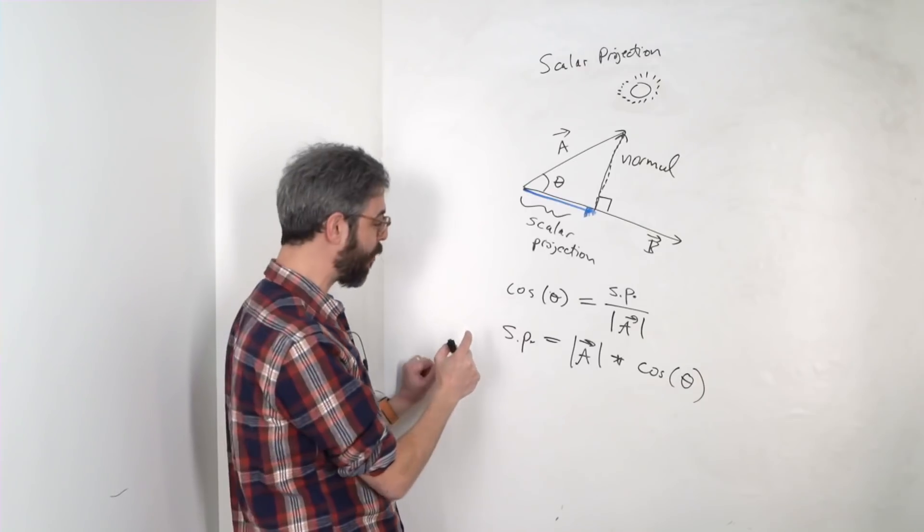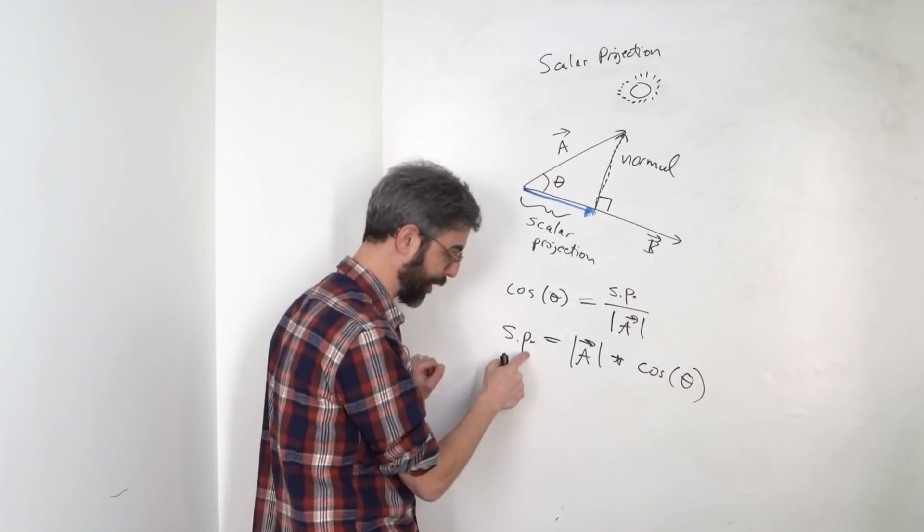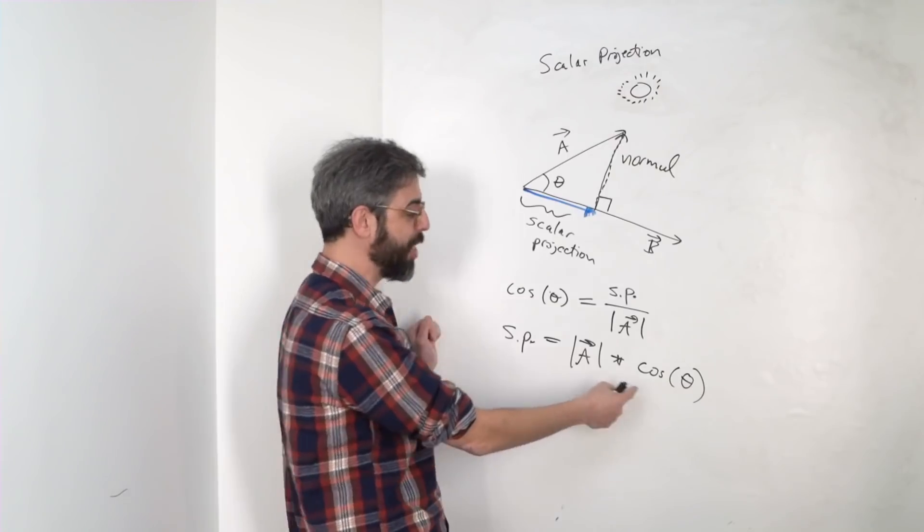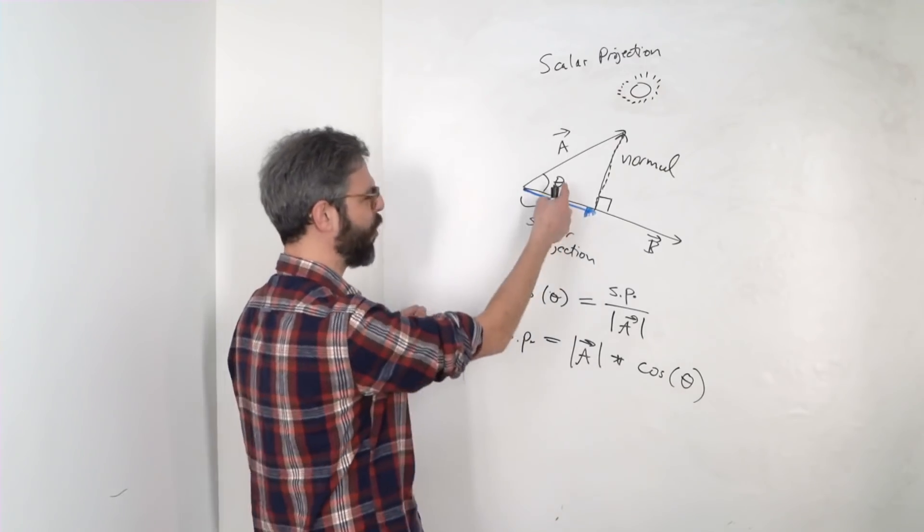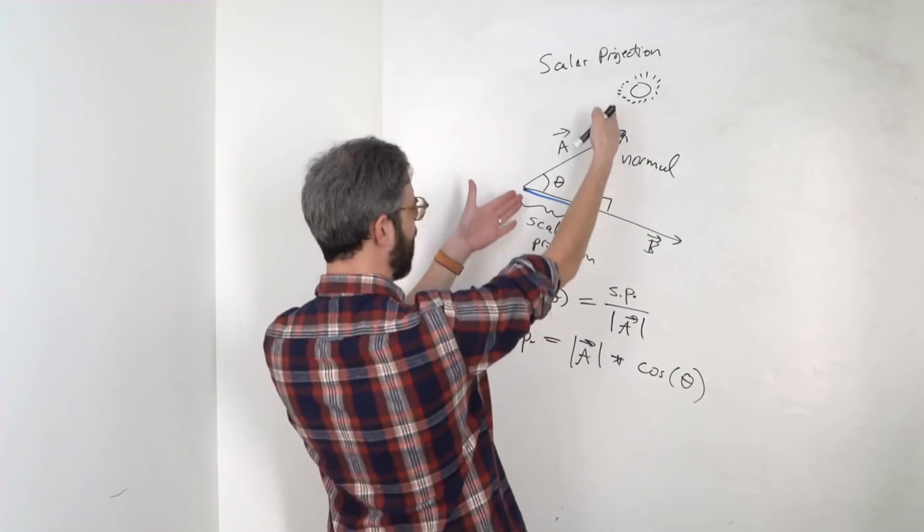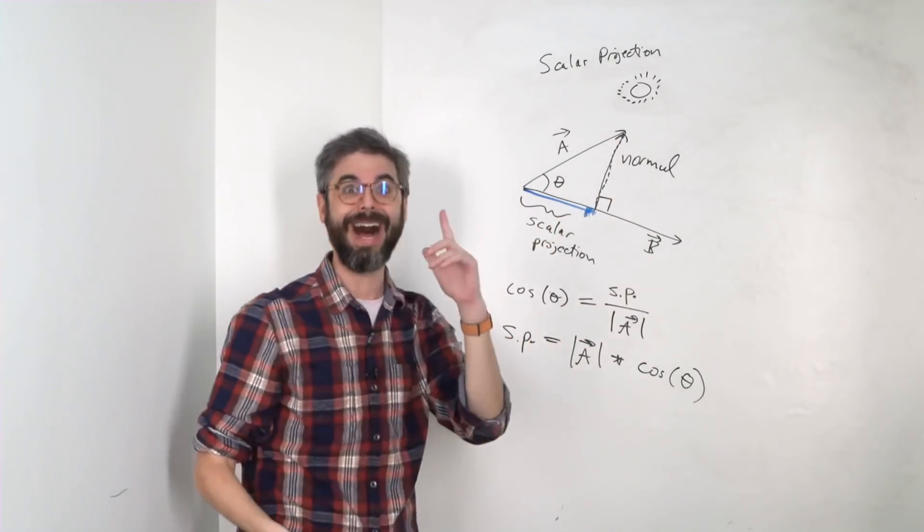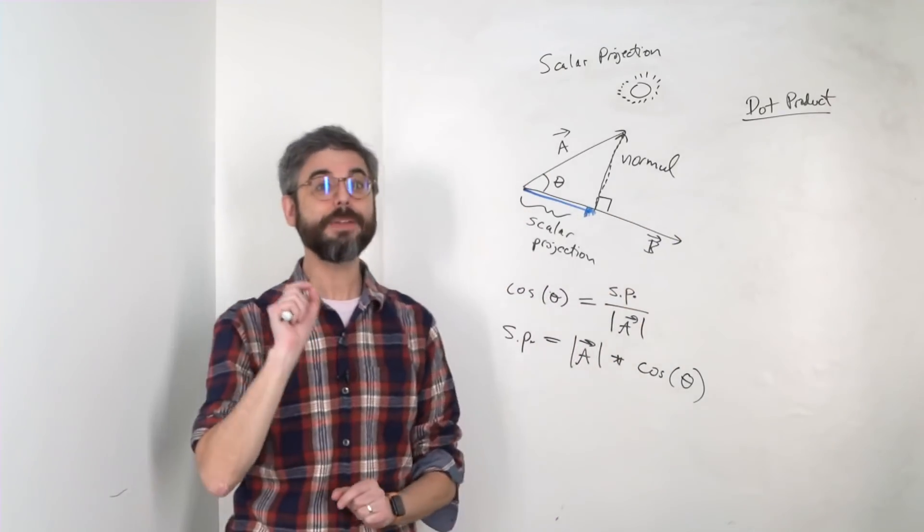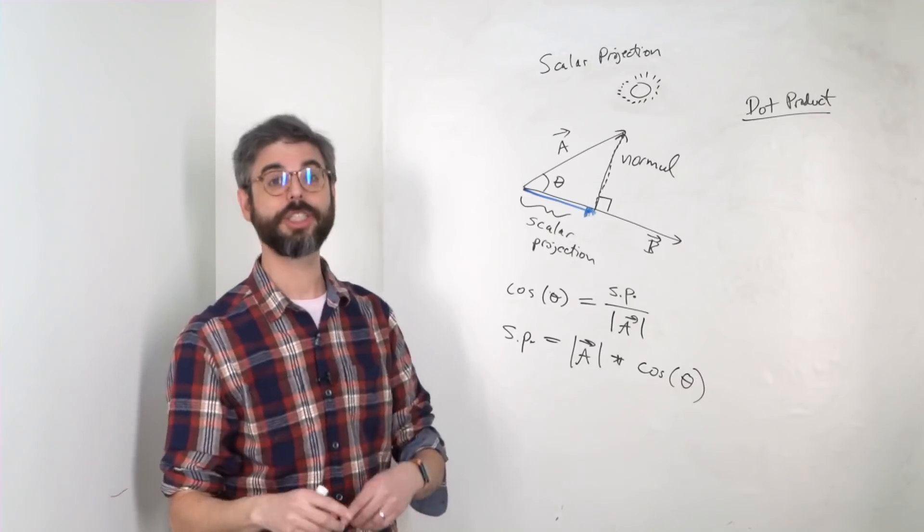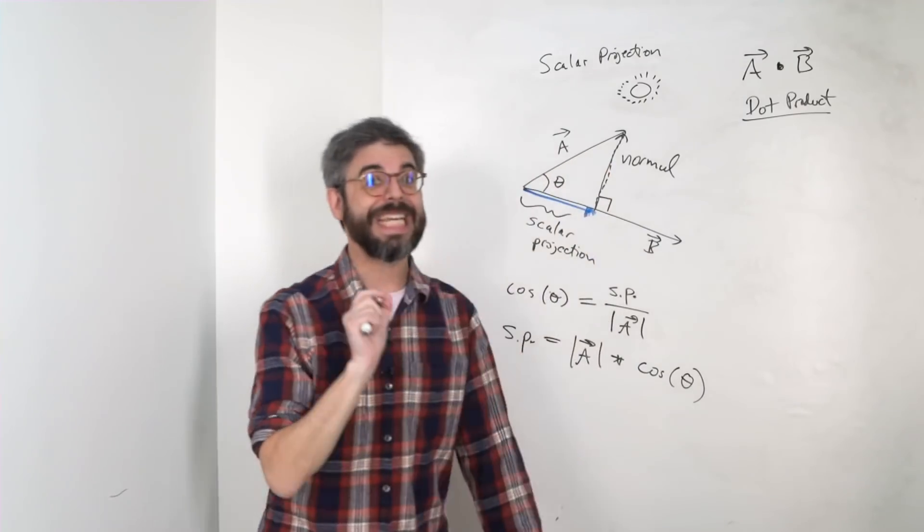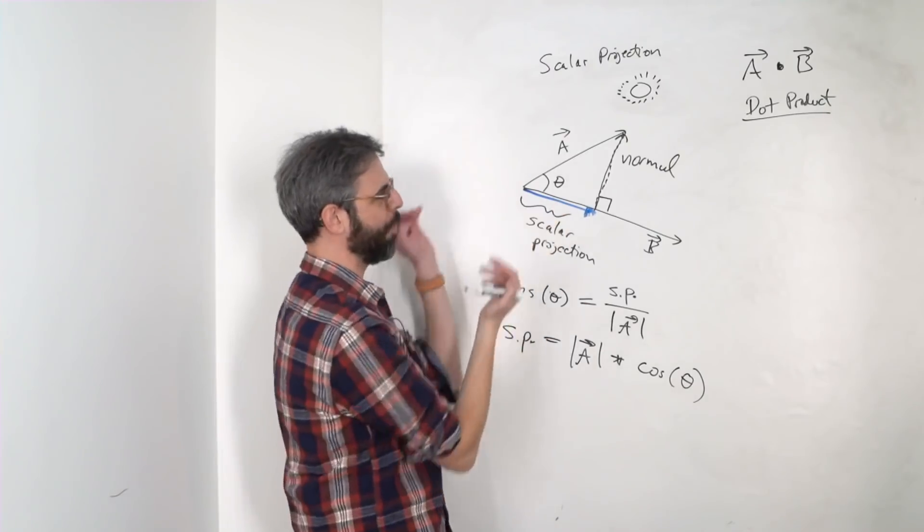Another way of writing this is scalar projection equals the magnitude of vector A times cosine of that angle. It was just about 45 minutes ago, but hopefully just a few minutes for you, I mentioned the dot product. Why did I mention the dot product? What am I trying to solve for? The scalar projection. I know the magnitude of vector A, but I don't know that angle. How do I figure out the angle between vector A and vector B? Aha!